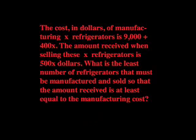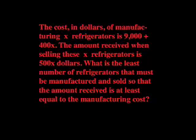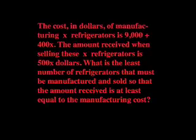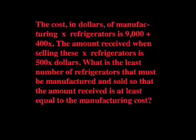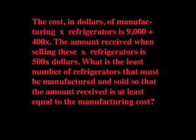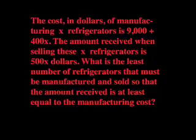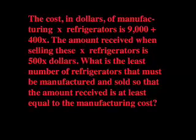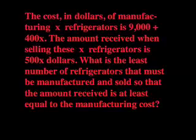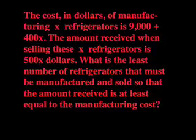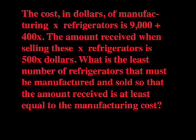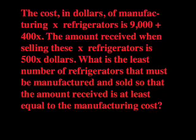Now we can look at the word problem. The cost in dollars of manufacturing X refrigerators is 9,000 plus 400X. The amount received when selling these X refrigerators is 500X dollars. What is the least number of refrigerators that must be manufactured and sold so that the amount received is at least equal to the manufacturing cost?